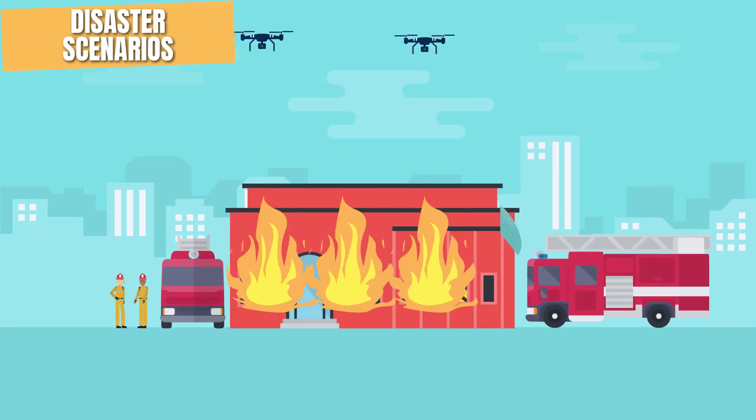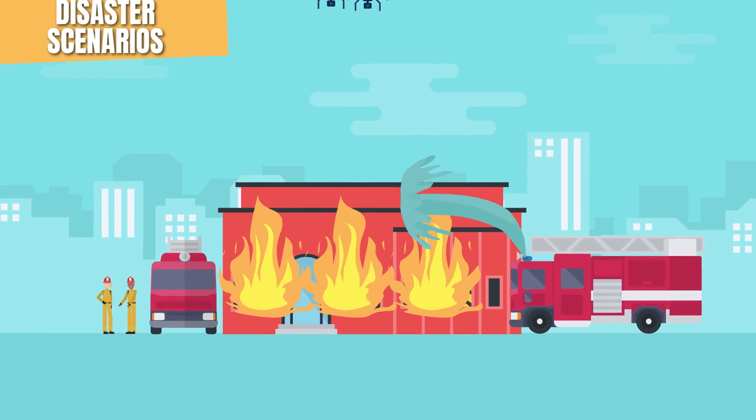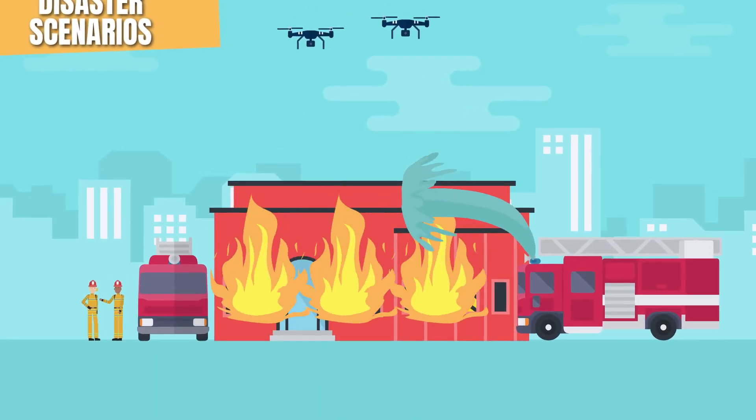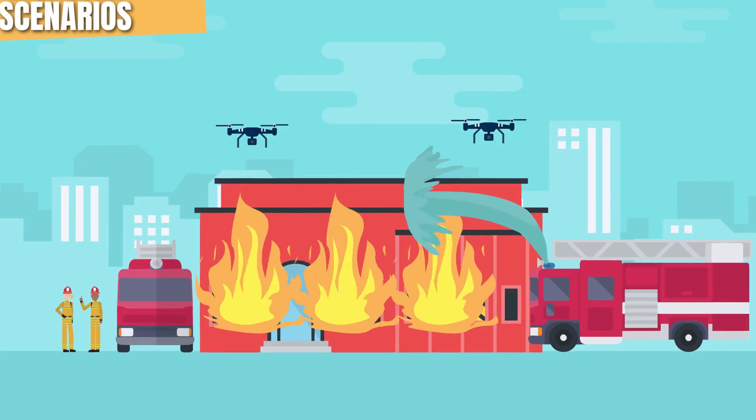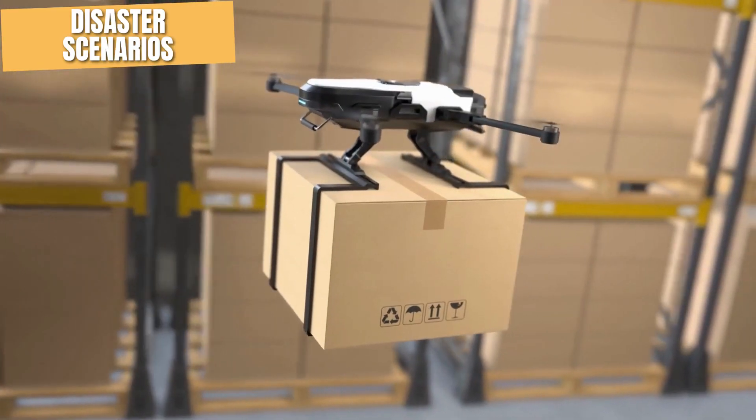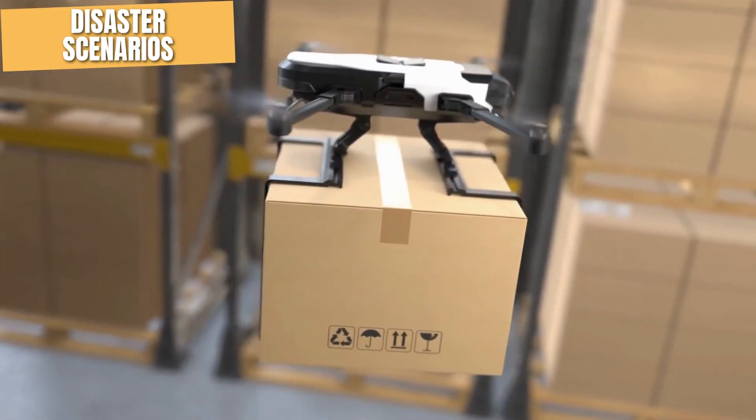In disaster scenarios, swarm robots can be deployed for search and rescue operations in areas too dangerous or difficult for human rescuers. They can navigate tight spaces and narrow passages, searching for survivors and delivering medical supplies and food.